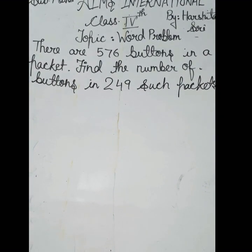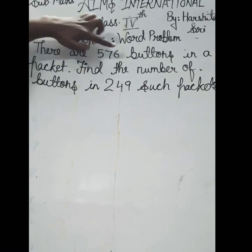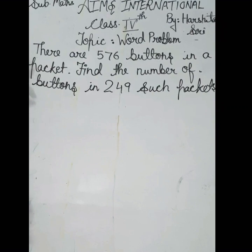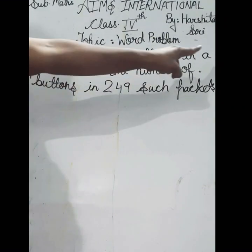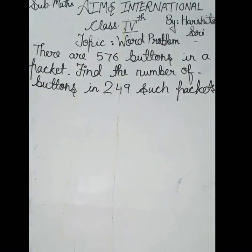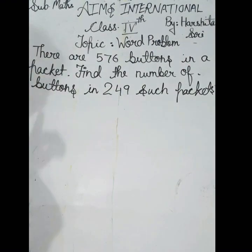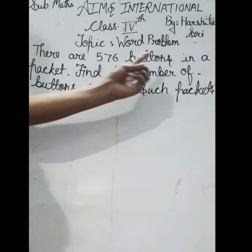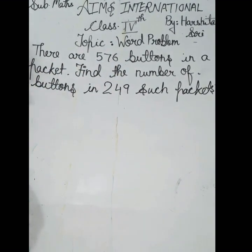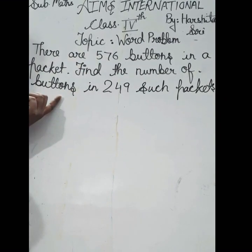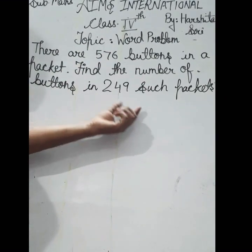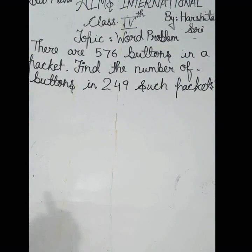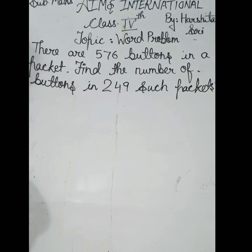हम इसकी हिंदी समझने की कोशिश करेंगे। There are 576 buttons — buttons आप में देखे होंगे, छोटी-छोटी जो buttons होते हैं, वही कहा गया यहाँ पे। 576 buttons in a packet — 'a' का मतलब होता है एक, यानि एक packet में 576 buttons रखे जाते हैं। Find the number of buttons in 249 such packets — अगर इस तरह की 249 packets हों, तो कितने buttons होंगे।